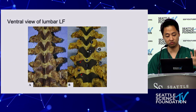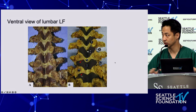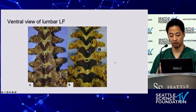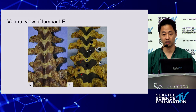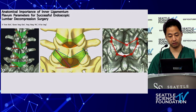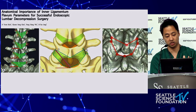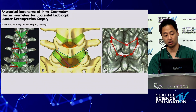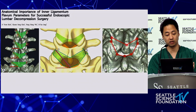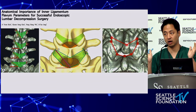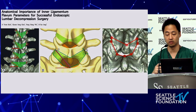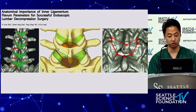Looking at the ventral view of the lumbar ligamentum flavum, you can see how the butterfly-shaped flavum covers the foramen considerably more as you go into the lower lumbar spine. A study examining hundreds of patients with CT found that the angle of the butterfly becomes more V-shaped going up in the lumbar spine, whereas lower down it takes a more horizontal shape.